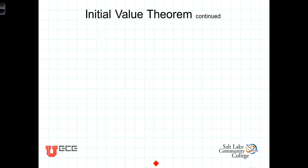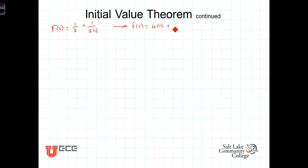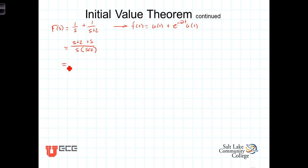Let's demonstrate the usefulness of the initial value theorem with a quick example. Assume that F(s) = 1/s + 1/(s+2). From the transform tables, we know the time domain function is f(t) = u(t) + e^(−2t)·u(t). Before applying the initial value theorem, let's combine these fractions: the numerator becomes (s+2) + s = 2s+2, and the denominator is s·(s+2).